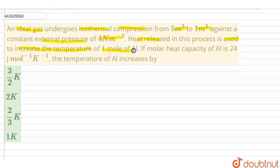...of one mole of aluminum. If molar heat capacity of aluminum is 24 joules per mole per kelvin, the temperature of aluminum increases by... An interesting question. So as instructed in the question, it's an isothermal compression.